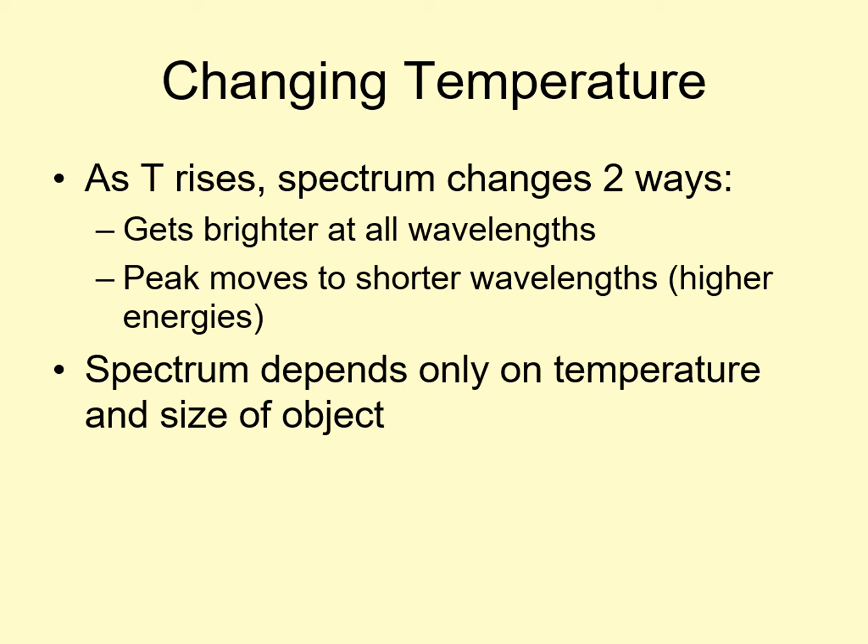Nothing else matters, including whatever the glowing object is made of. The only limitation is that it has to be opaque. In other words, you can't see through it. If you can see through it, then it produces an emission spectrum. We'll see those a little later on.